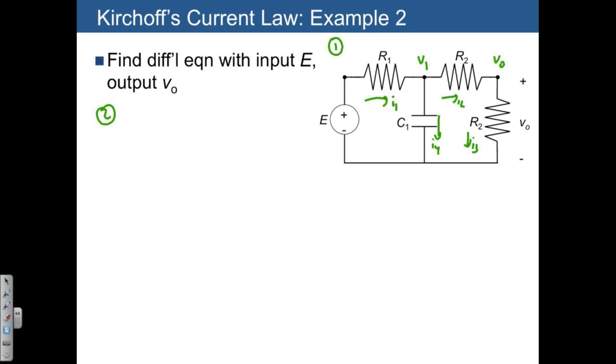Step two is to apply Kirchhoff's current law. Starting with the first junction, we see I1 minus I2 minus I4 equals 0.